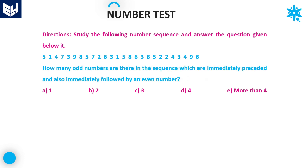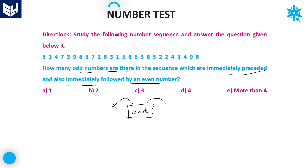Next question. How many odd numbers are there in the sequence which are immediately preceded and also immediately followed by an even number? It is nothing but the odd number should be there between two even numbers.